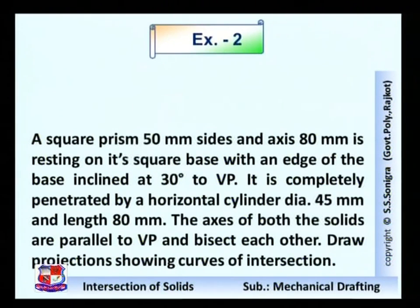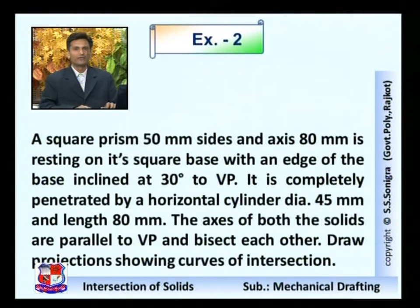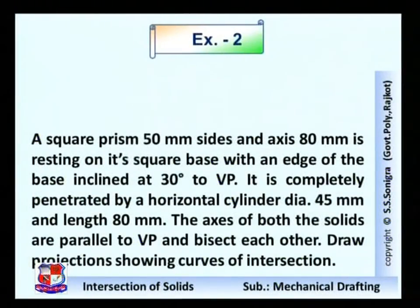Now we discuss the second problem. The data is: a square prism of 50 mm sides and axis 80 mm is resting on its square base with an edge of the base inclined at 30 degrees to the vertical plane. It is completely penetrated by a horizontal cylinder of diameter 45 mm and length 80 mm. The axes of both solids are parallel to the vertical plane and bisect each other. Draw projections showing the curve of intersection. Here a square prism is cut by a horizontal cylinder, so it is a case of prism and cylinder.